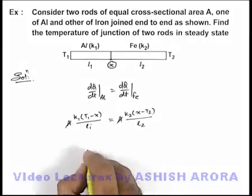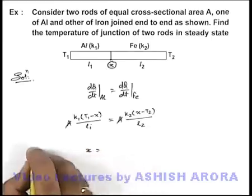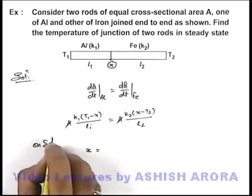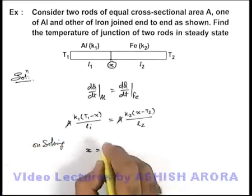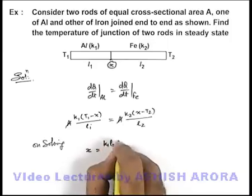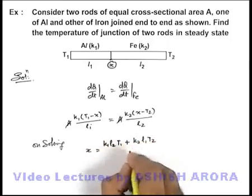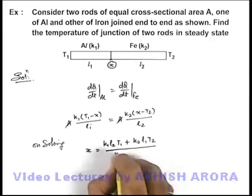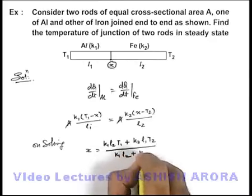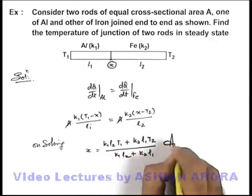On simplifying this expression, very easily you can get the value of x. On solving we'll get the result: x = (k1·l2·T1 + k2·l1·T2) divided by (k1·l2 + k2·l1). This will be the answer to this problem.